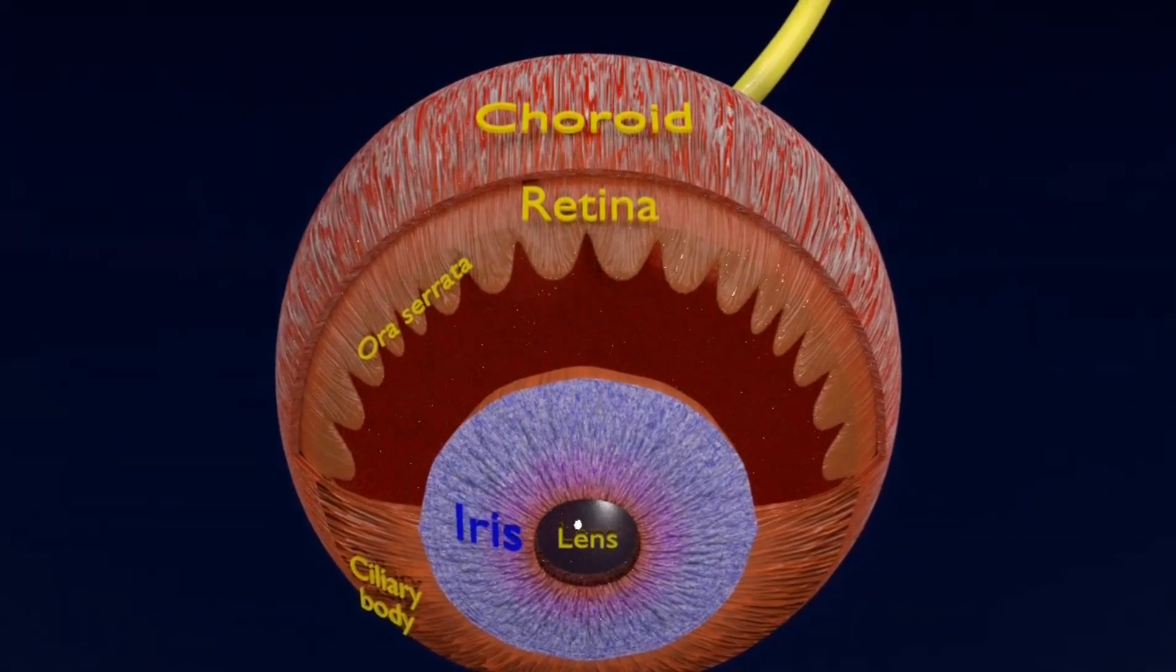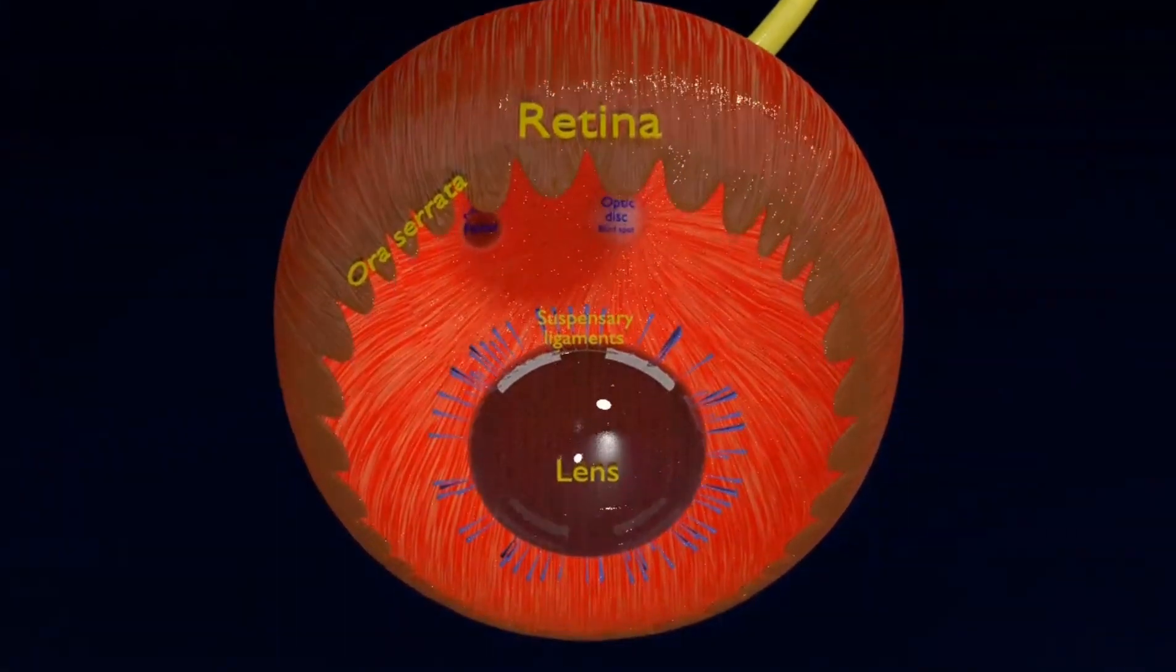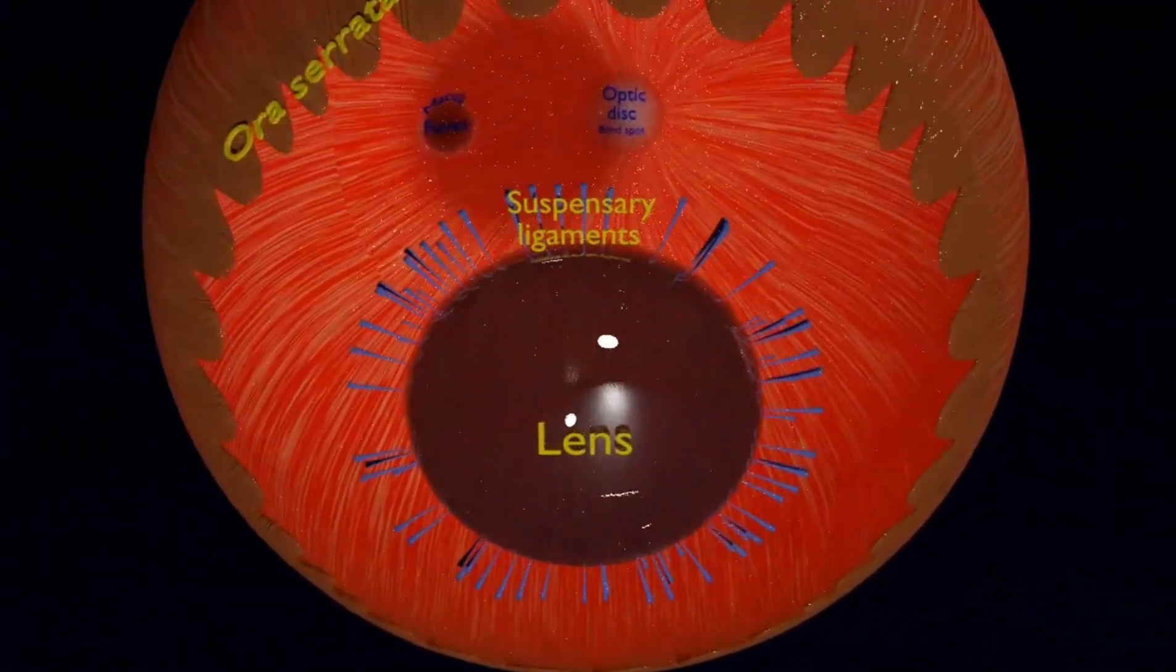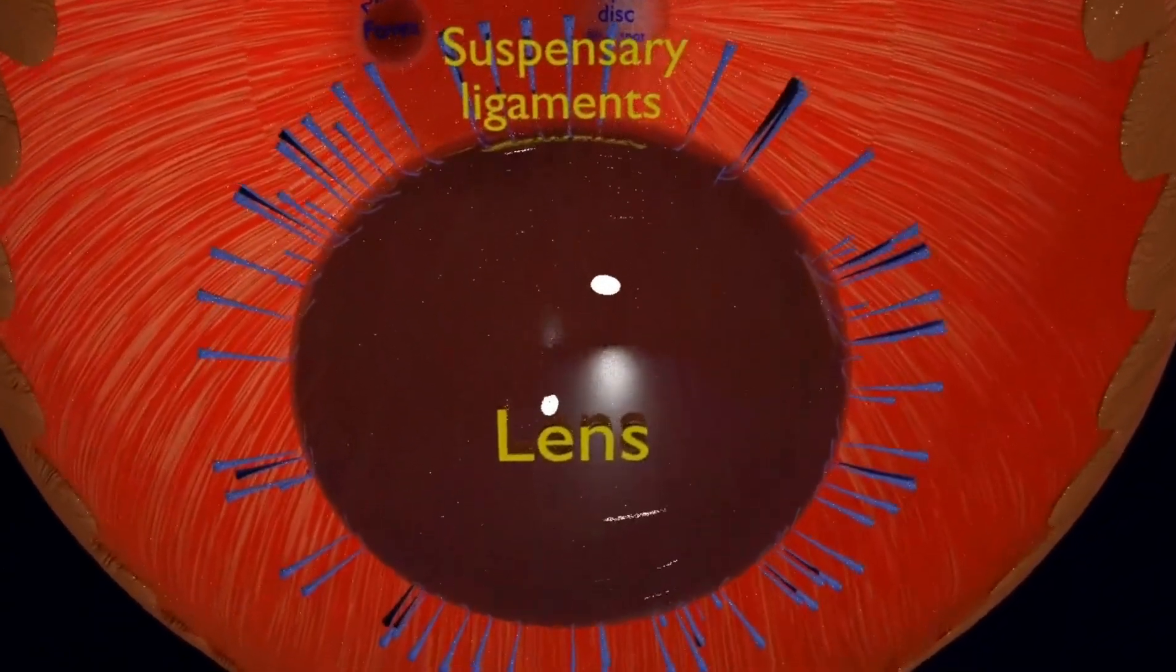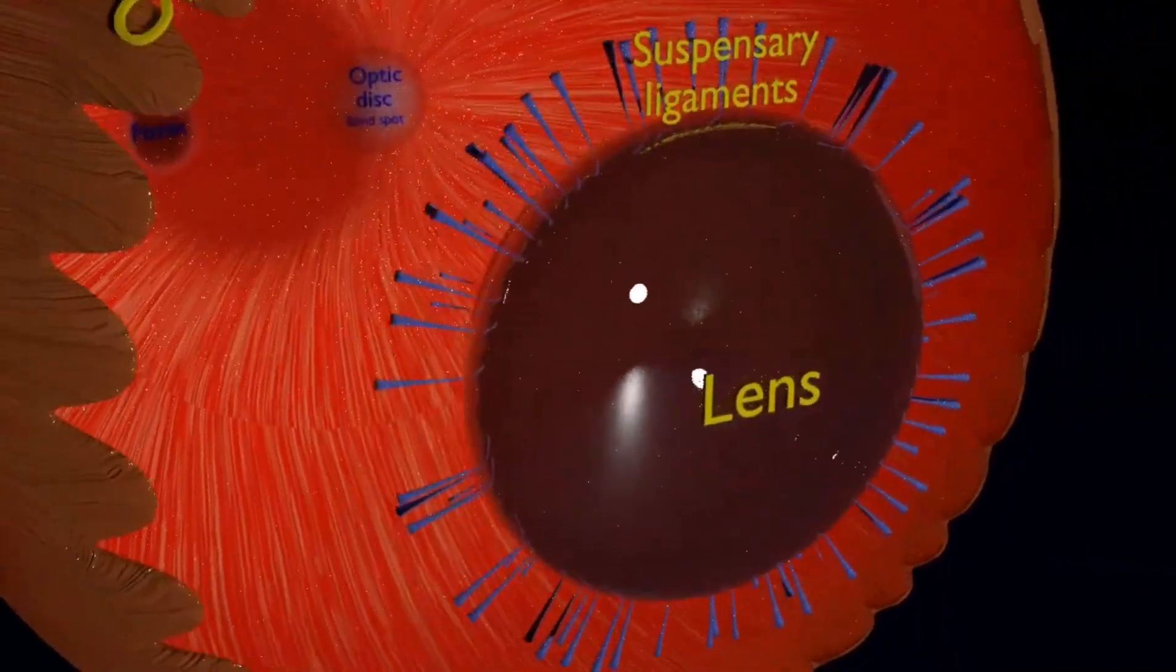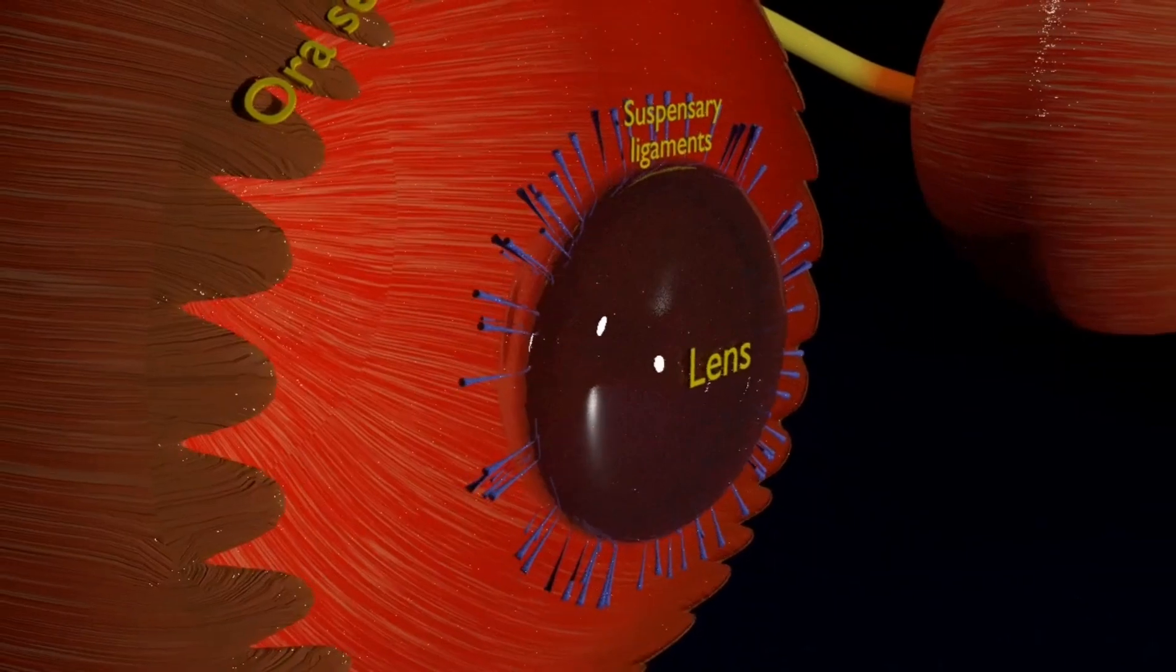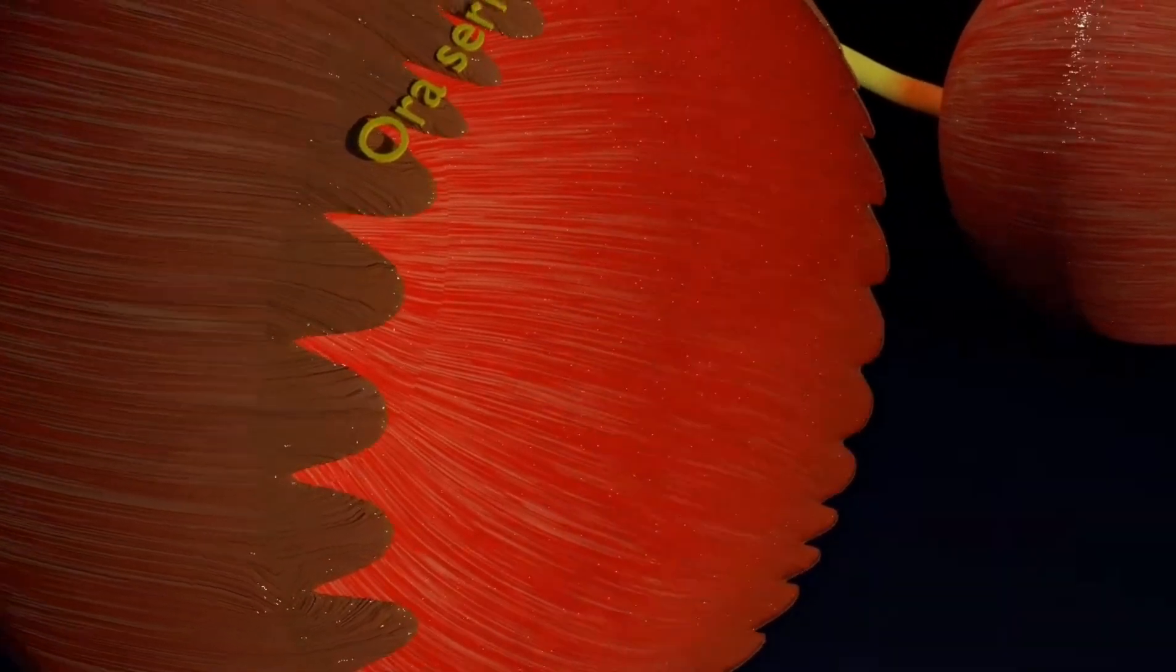The inner retina with its anterior part, the ora serrata, merging into the ciliary body was also visible. The choroid, once completely removed, shows the lens with its suspensory ligaments and whole of the retina filled up with vitreous humor.